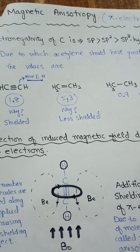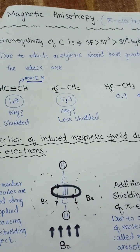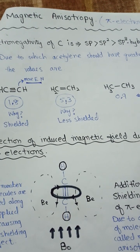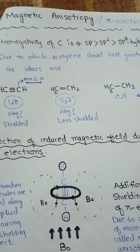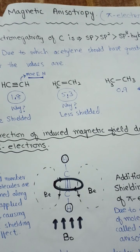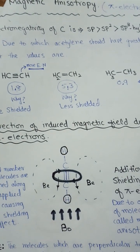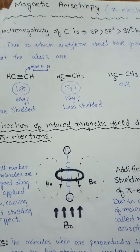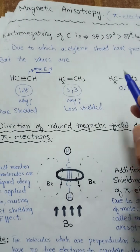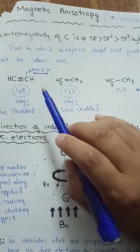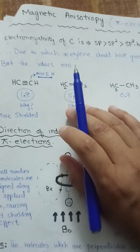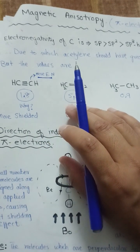Dear students, Assalamu alaikum. Today we are going to discuss magnetic anisotropy. This topic is included in NMR spectroscopy, and magnetic anisotropy is actually the effect of pi electrons on the chemical shift value of the NMR peaks or signals. We will consider an example of ethane, ethylene, and acetylene, in which we have pi electrons, and what are the effects of these pi electrons on the NMR signal.